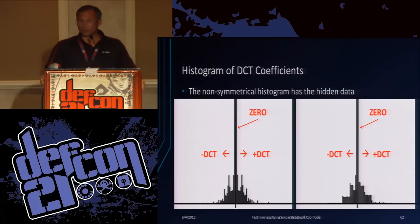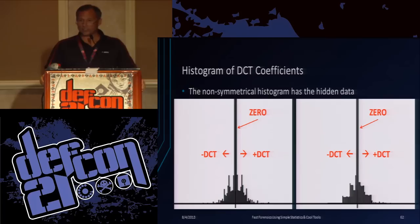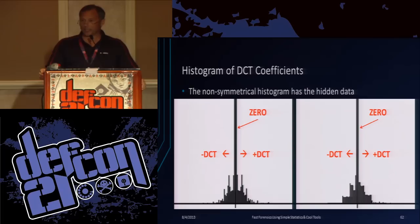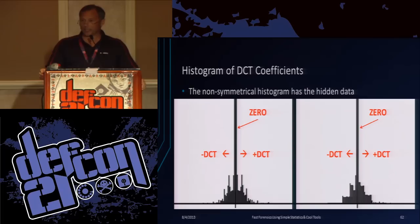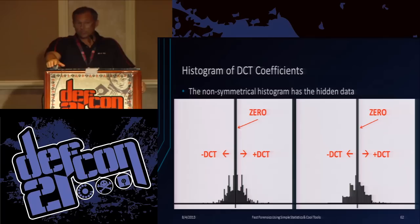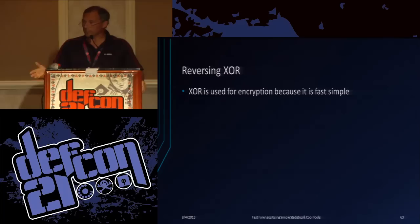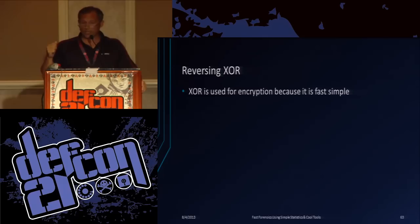But when you start messing with the coefficients and hiding data, they don't match anymore. If you have a negative one and you change the least significant bit, it becomes negative two. If you have a one and you change the least significant bit, it becomes zero. So even if you change one and negative one evenly, they're off balance. So that one takes a little more work to hide. There are some programs that try to balance those out. The tool provided on the DefCon CD for hiding in JPEG does the hiding you've seen here, but it doesn't do anything to balance the DCT histograms.